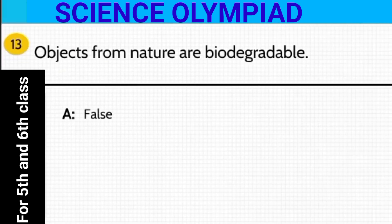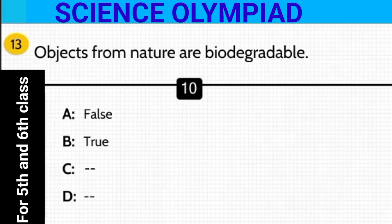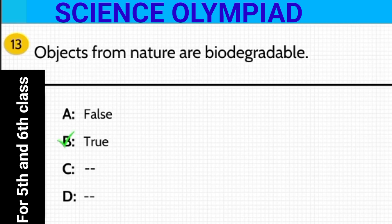Objects from nature are biodegradable — is this statement true or false? Biodegradable substances are those which can be decomposed easily and do not contribute to any kind of pollution. So yes, this statement is true.